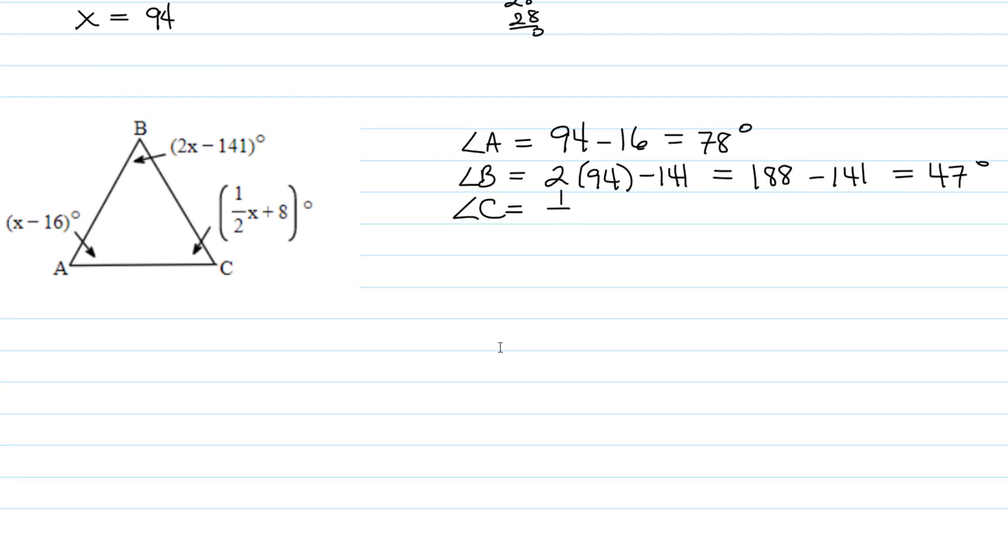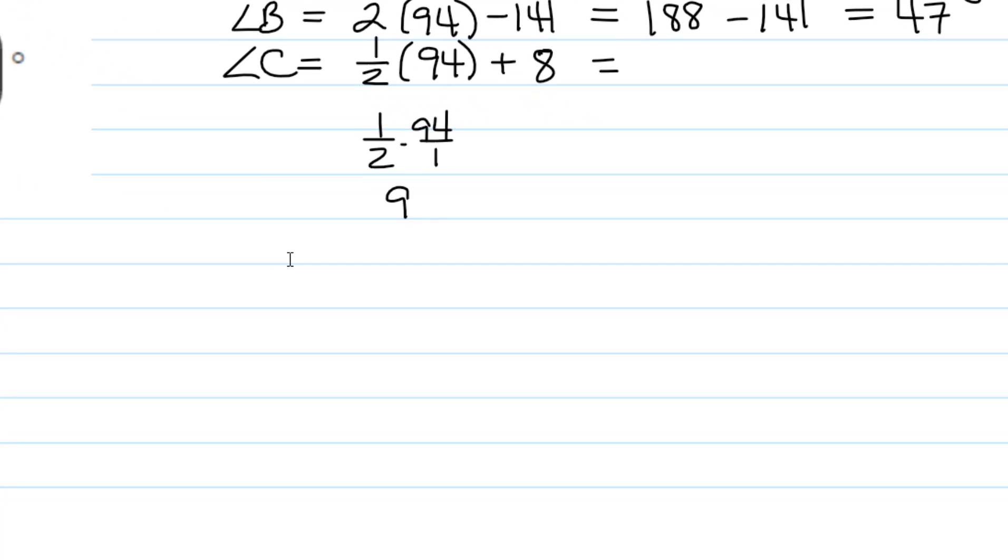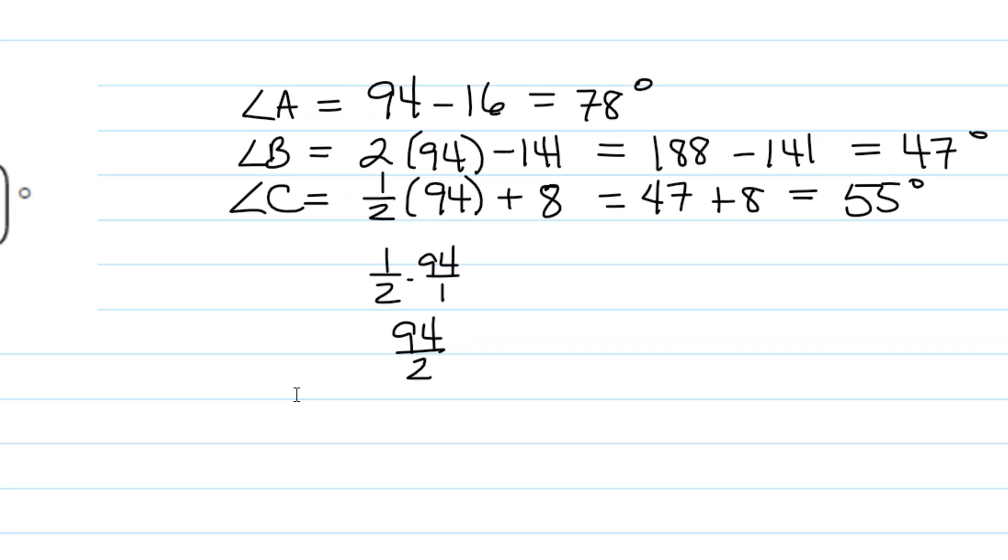And then angle C is going to be 1 half times 94 plus 8. How do you do half of 94? Remember, 1 half times 94 over 1 is the same as 1 half times 94. Multiplying straight across, you just get 94 over 2. 94 divided by 2 is going to be 47. So we have 47 plus 8, which is equal to 55 degrees.